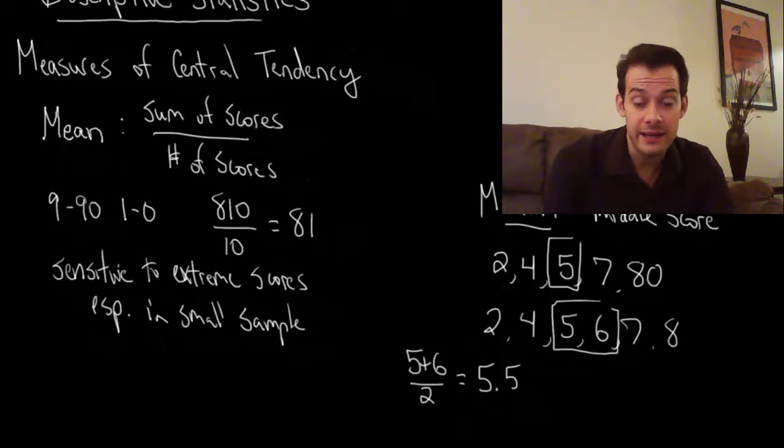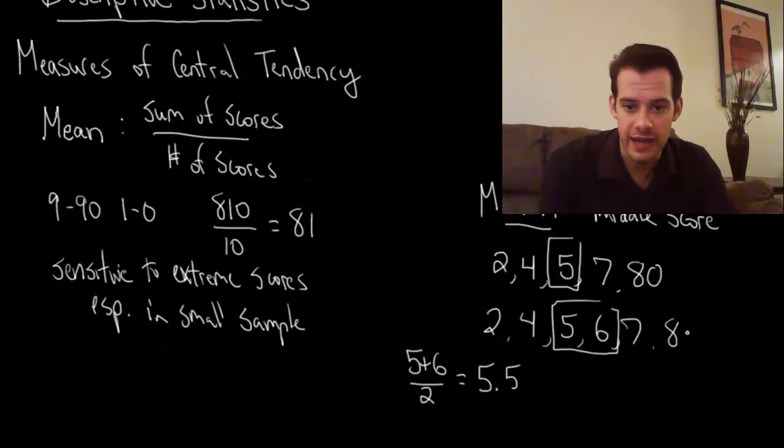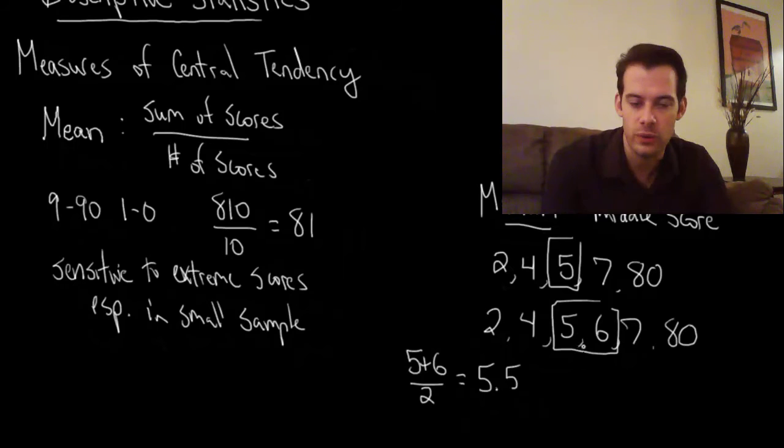So that's the median. It's much less sensitive to extreme scores — I could change the highest value to 80 and this wouldn't change at all.